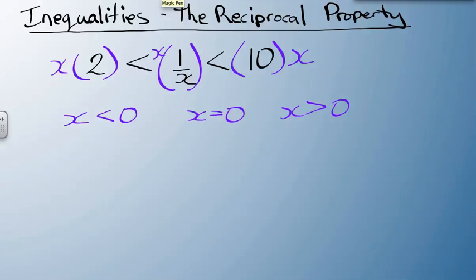Because if we multiply all three parts by a negative x, or if x is a negative number, then I'm going to have to flip all those inequality symbols. And that's just a little more complicated.